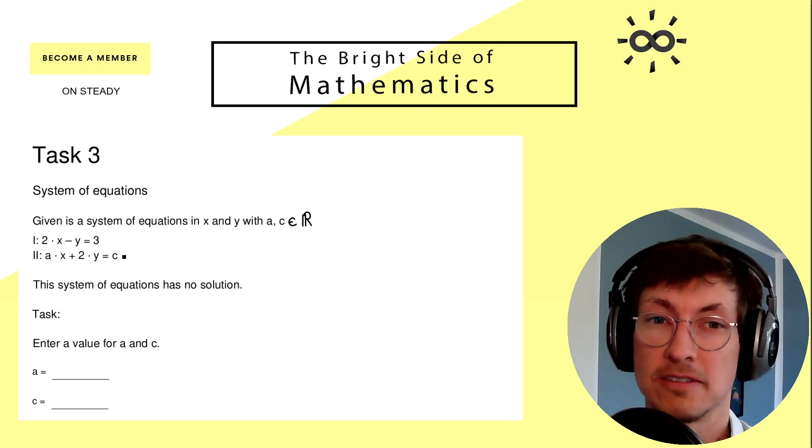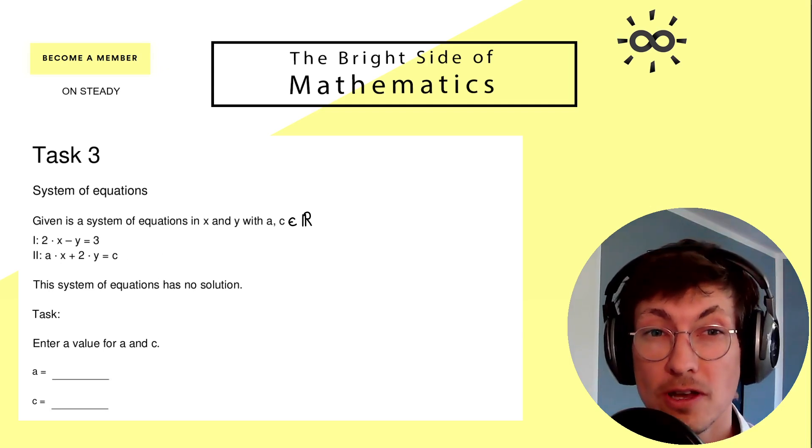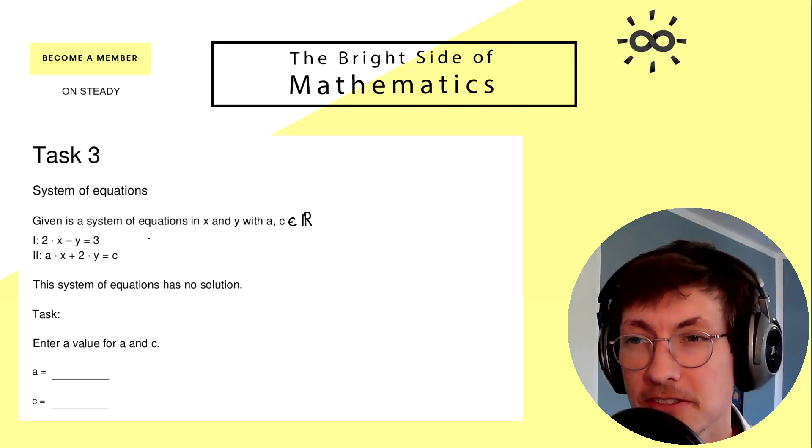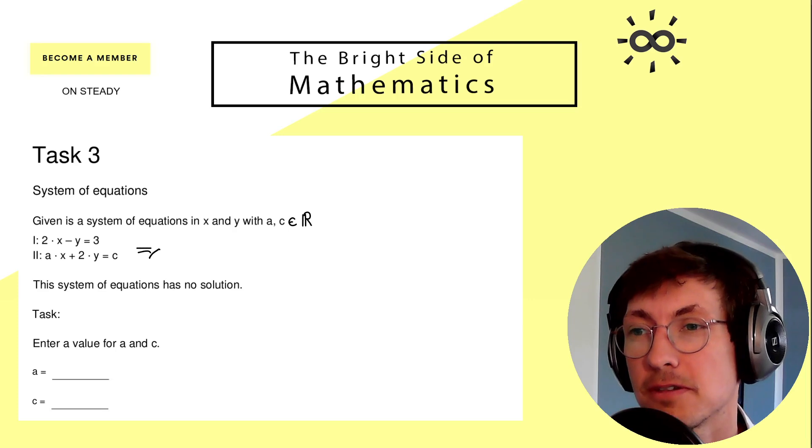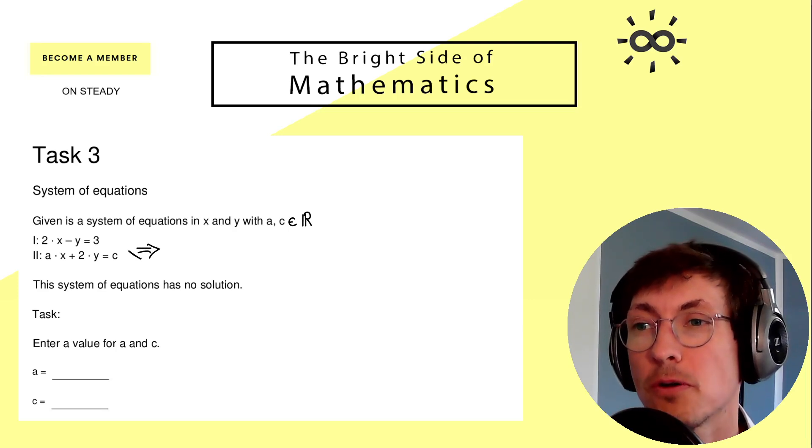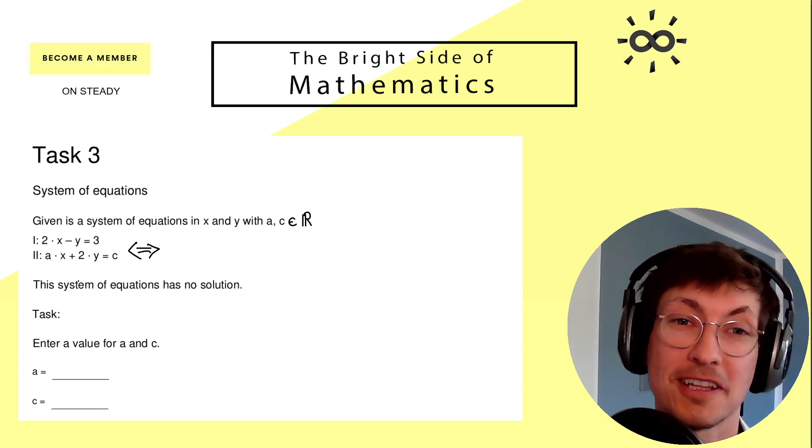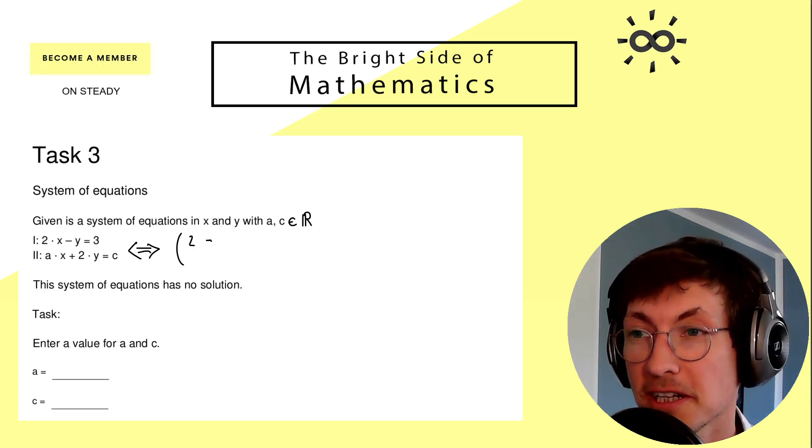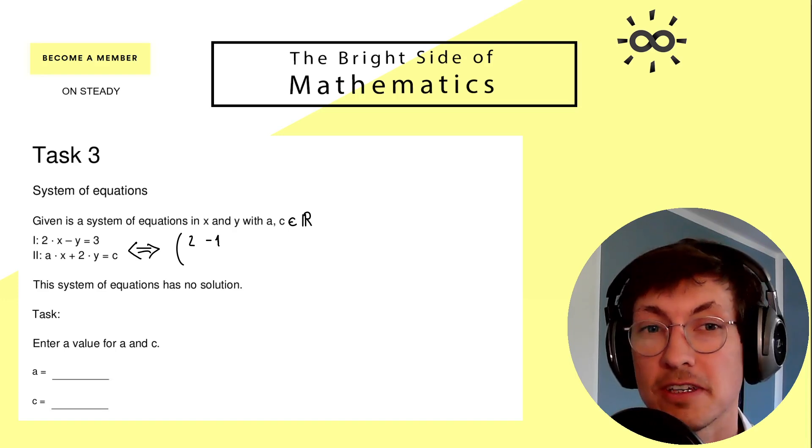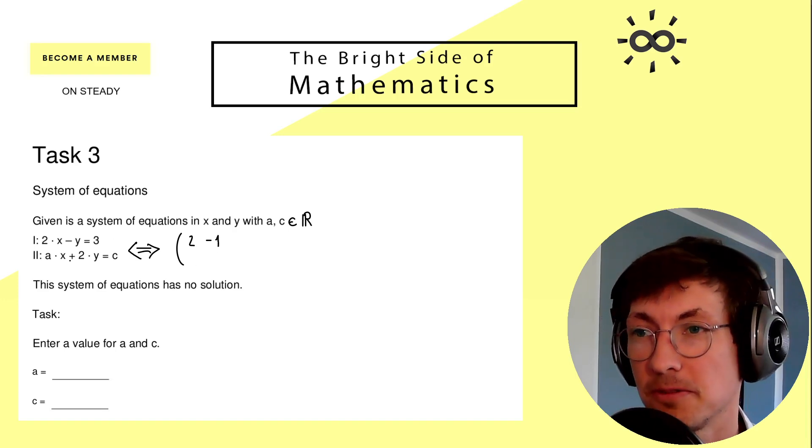However, I would say for linear equations you should always use a system which is scalable, so you transform it into something which also would work if you have more than two equations. As you should know, this is a matrix-vector multiplication where we can use the Gaussian elimination.